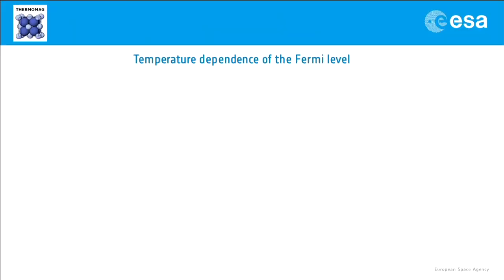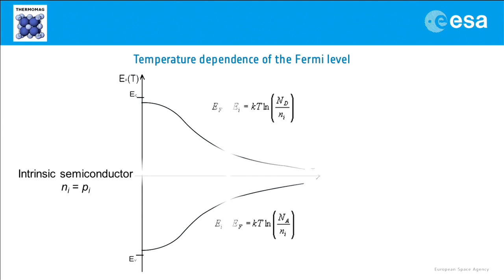Now let's have a look at the temperature dependence of Fermi level. When we have an intrinsic semiconductor, amount of electrons and holes is about the same, so the Fermi level lies halfway between conduction band and valence band. In case of extrinsic semiconductors, the situation is a bit more complicated.